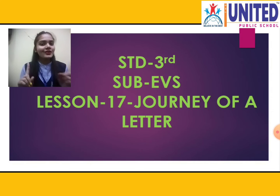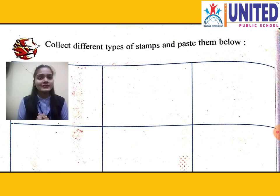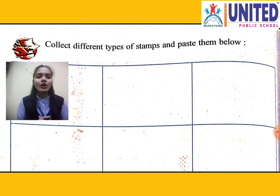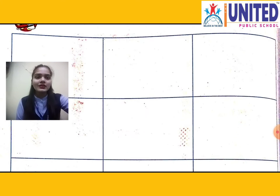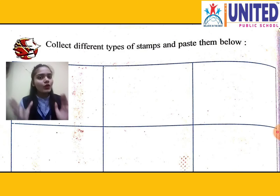Now let's start. Here one activity is given and you have to do this activity. The activity says: collect different types of stamps and paste them below. In this activity you have to collect different types of stamps and paste all those stamps here.